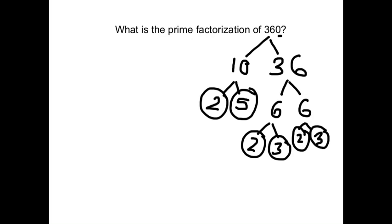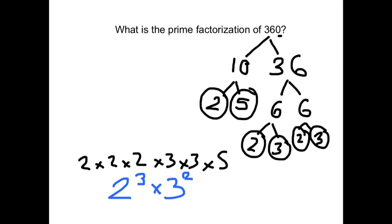I make sure that I circle my prime numbers, and now I write out my prime factorization. It's 2 times 2 times 2 times 3 times 3 times 5. You can also write it with exponents: 2 cubed times 3 squared times 5. And if I multiply that out, it should equal 360. That's how you could check your work.